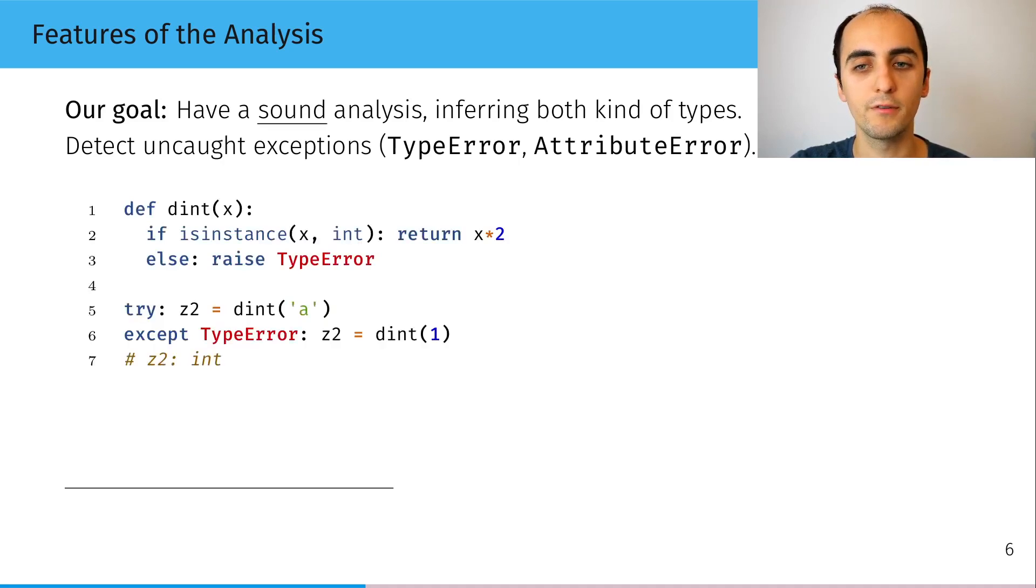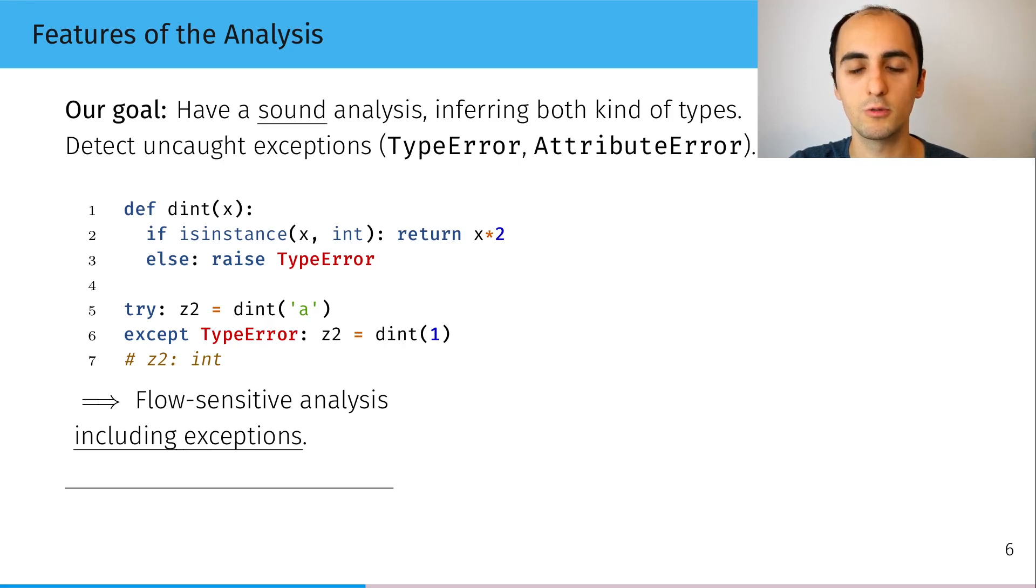By looking at this first piece of code where a function returns double of an integer or raises a type error and is called once to raise a type error and then is called correctly, we see that at line 7, z2 will be an integer and there will be no exception raised. So this means that we'll have to perform a flow-sensitive analysis which precisely handles exceptions.